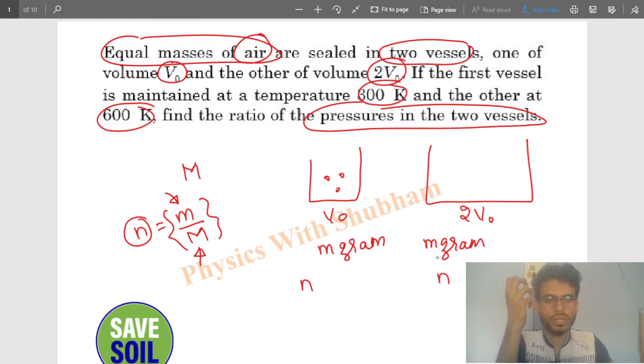The first vessel's temperature is 300 Kelvin and the second one is 600 Kelvin. We need to find the pressure. So you can use this equation, PV equals nRT. From here, the pressure will be nRT divided by volume. Now let's find this for the first vessel and the second vessel.